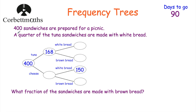Our last question says 400 sandwiches are prepared for a picnic, and a quarter of the tuna sandwiches are made with white bread. We've got a frequency tree and the question asks: what fraction of the sandwiches were made with brown bread? So pause this video now and try this question yourself and see if you can do it.